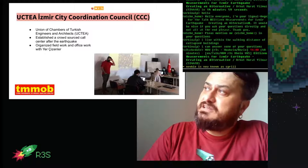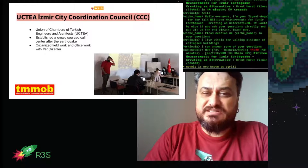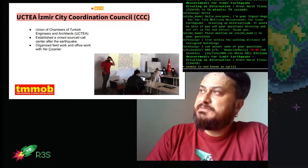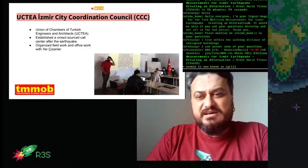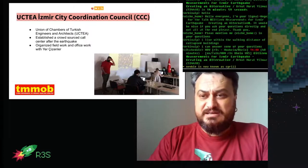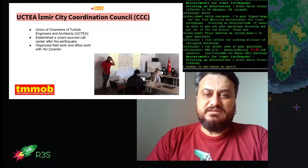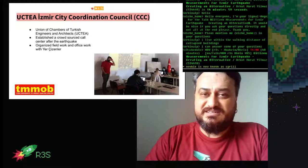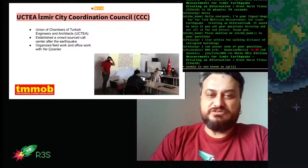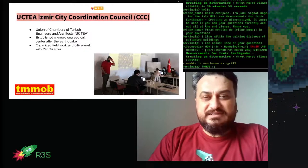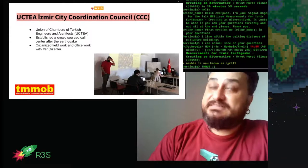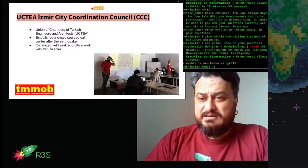There is a national institution in Turkey — the Union of Chambers of Turkish Engineers and Architects — bringing together people from different branches of engineering, architecture, and urban planning since the 1950s. We contacted the Izmir City Coordination Council (CCC), and they established a crowdsourced call center after the earthquake to organize field work, office work, and workshops, helping us with data collection and analysis.